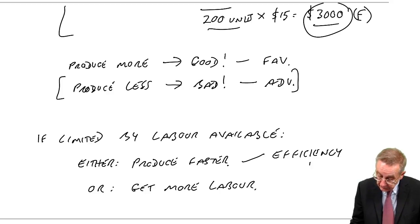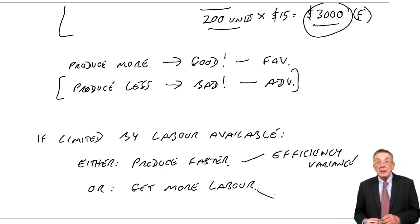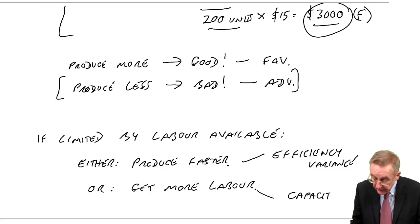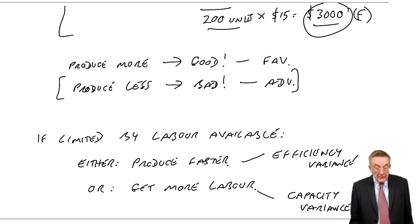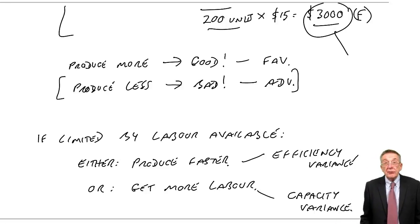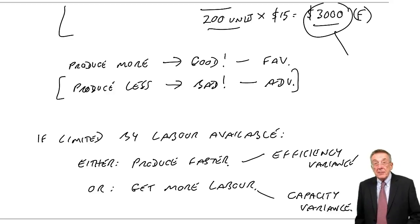And so, the exam can ask you to calculate the effect. You know, we know here that we produced 200 more units. But they can ask you to calculate how much of that was because they worked faster. And that we call the efficiency variance. Or how much of it was because we got more labour. And if we manage to get more labour, we call that the capacity variance.